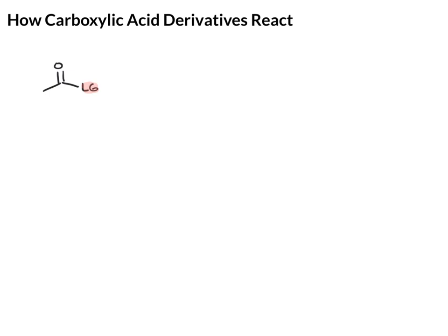If it's an acid halide, that might be something like a Cl. If it's an anhydride, the leaving group would be this acetate group. If it's an ester, it might be something like a methoxy group, or if it's an amide, an NH2 group.